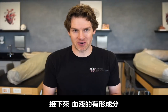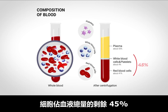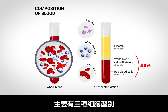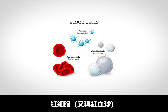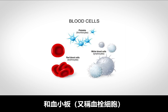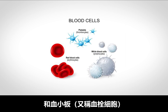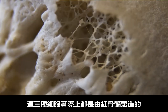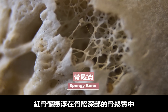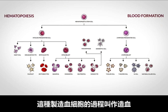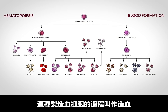On to the next component of the blood — the formed elements or the cellular component. This makes up the remaining 45% of your total blood and is broken down into three cell types: red blood cells, also known as erythrocytes; white blood cells, also known as leukocytes; and platelets, also known as thrombocytes. All three of these cell types are made by the red bone marrow suspended within the deep part of your bones called spongy bone. This process of producing blood cells is referred to as hematopoiesis.